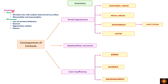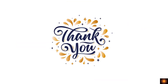In summary: grossly, the liver has a reduced size and nodular surface; nodules are classified as micro- or macronodular with a 3 mm cutoff. Microscopically, there is loss of architecture, necrosis, regenerative nodules, and fibrosis. The three important consequences of cirrhosis are portal hypertension, hepatocellular carcinoma, and liver insufficiency. Portal hypertension causes esophageal varices, rectal varices, splenomegaly with pancytopenia, and ascites; liver insufficiency causes edema, jaundice, and encephalopathy.